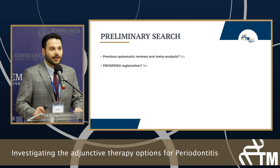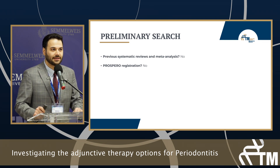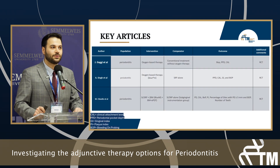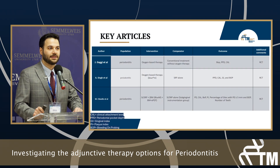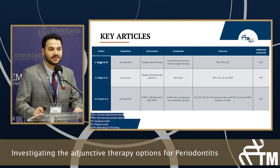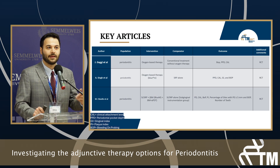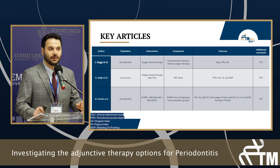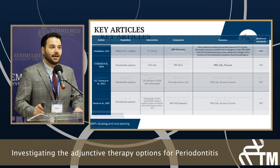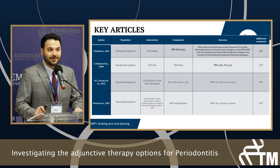Regarding my preliminary research, I did not find any PROSPERO registration or existing systematic reviews. These are my key articles: the first half compare oxygen-based therapies to conventional treatments — SRP alone — with the same outcomes I already discussed, and all of them are RCTs.